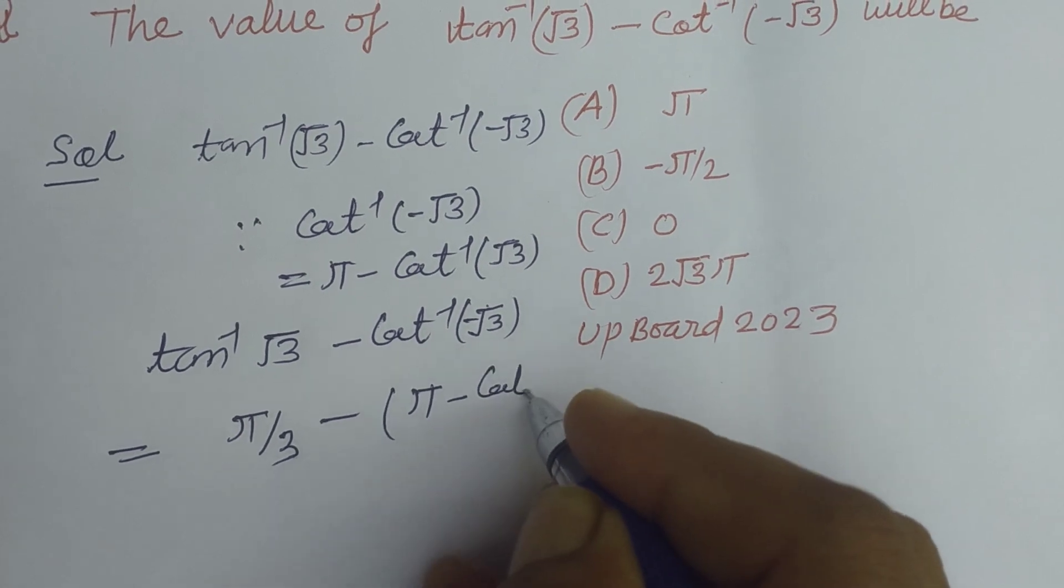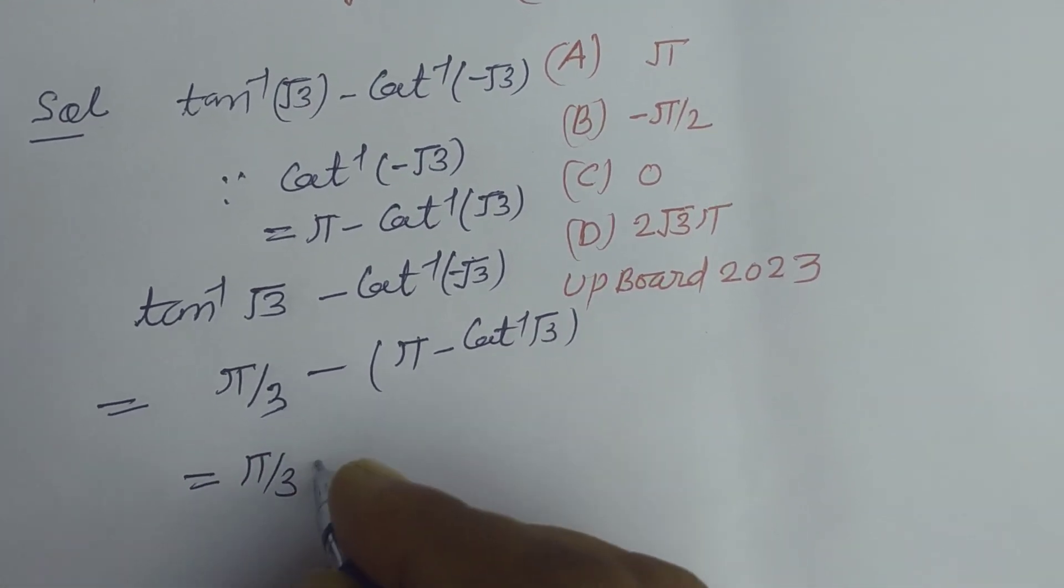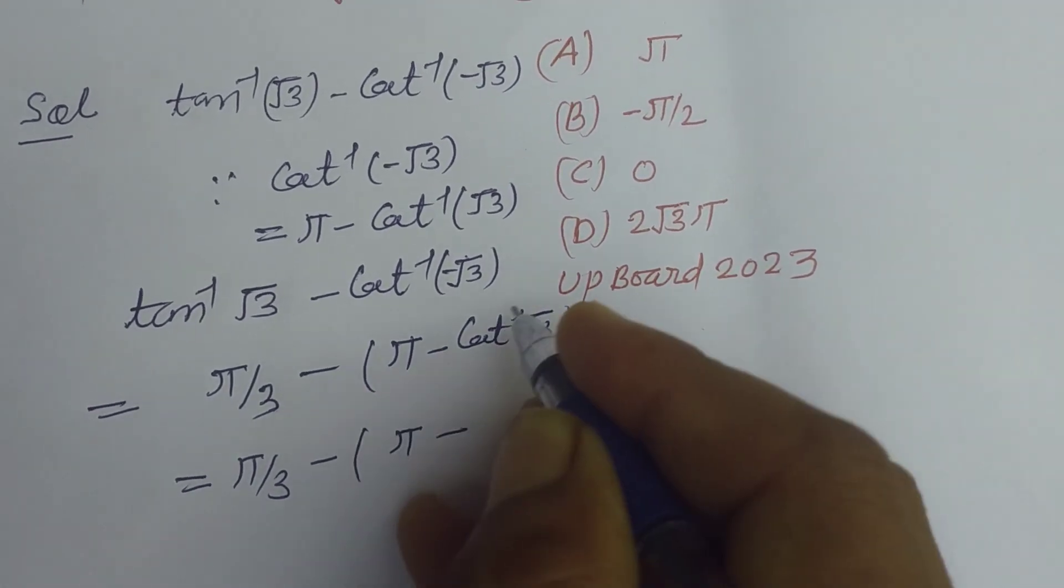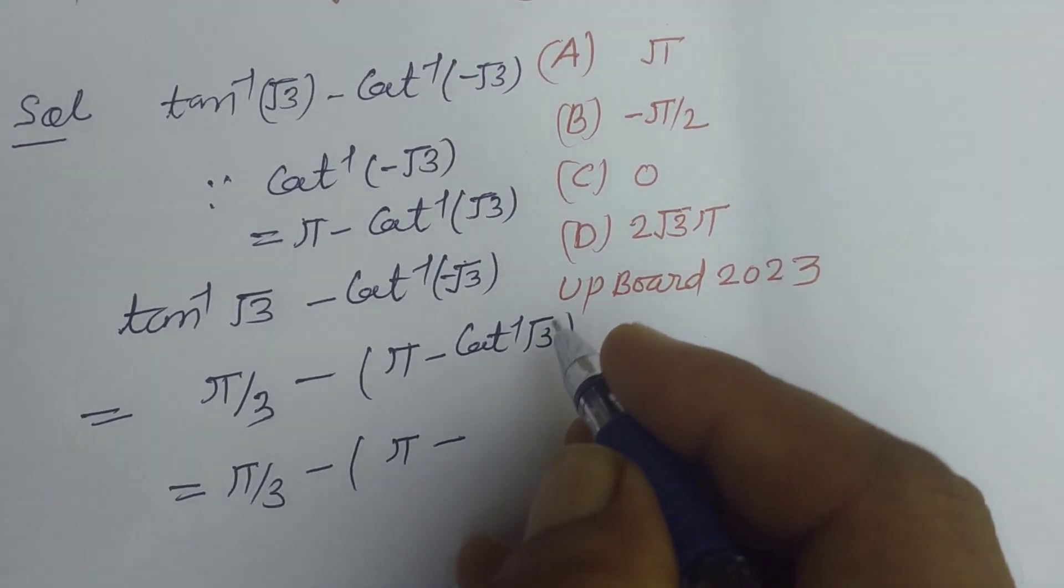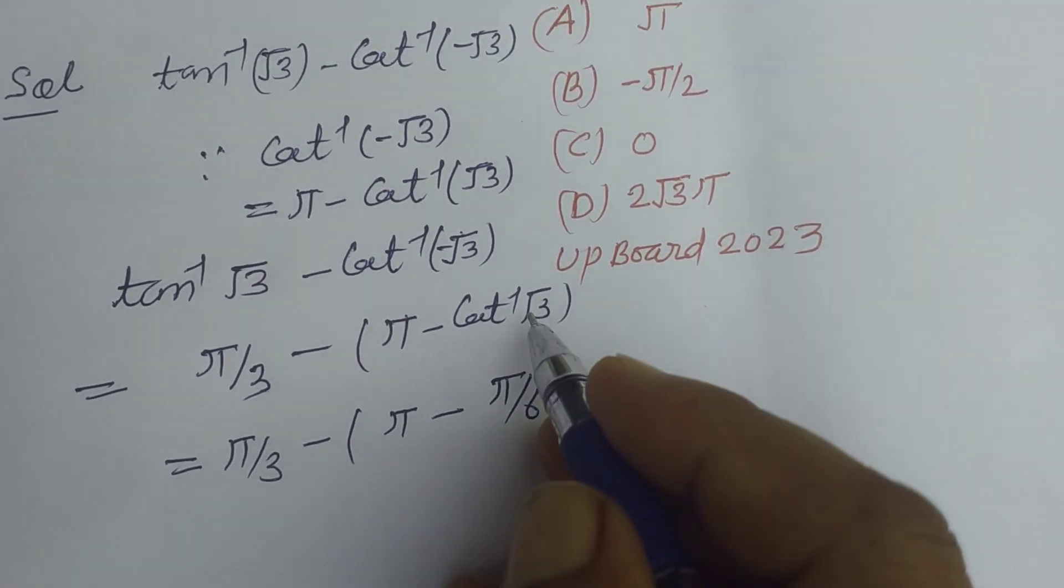So π/3 minus [π - cot^(-1)(√3)]. The value of cot^(-1)(√3) is π/6, because cot(π/6) equals √3.